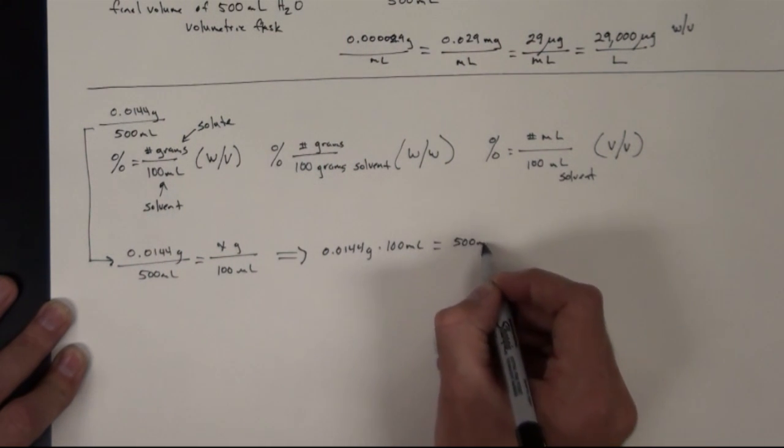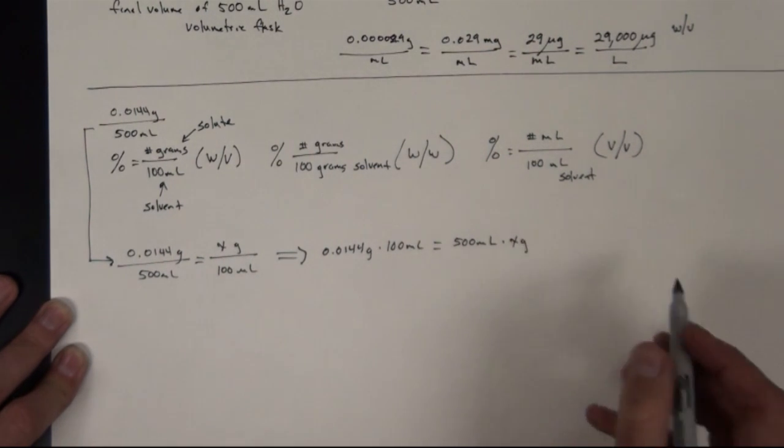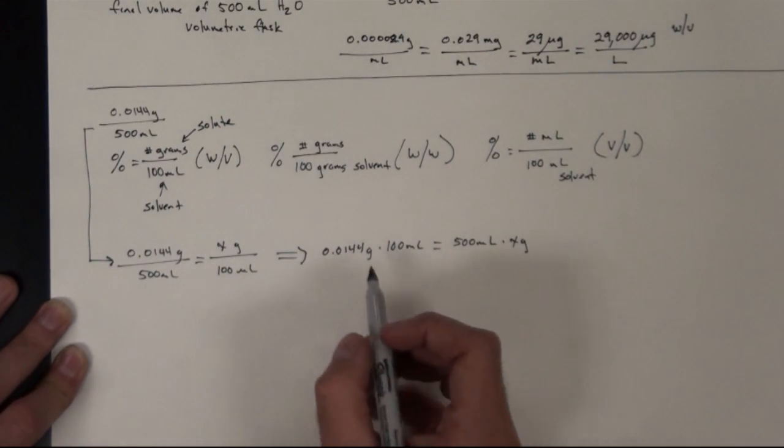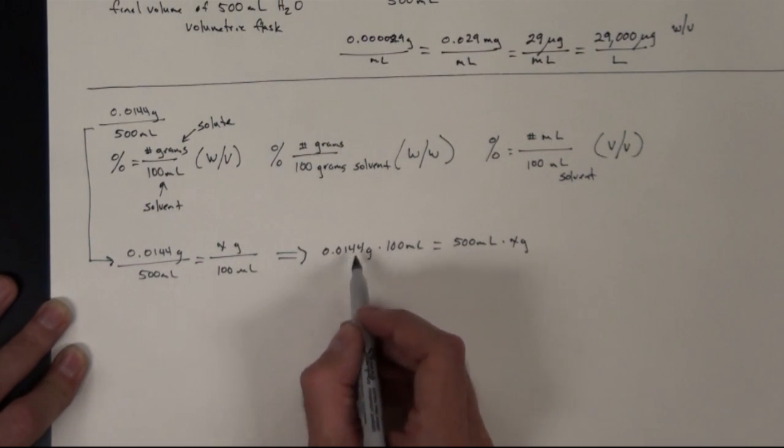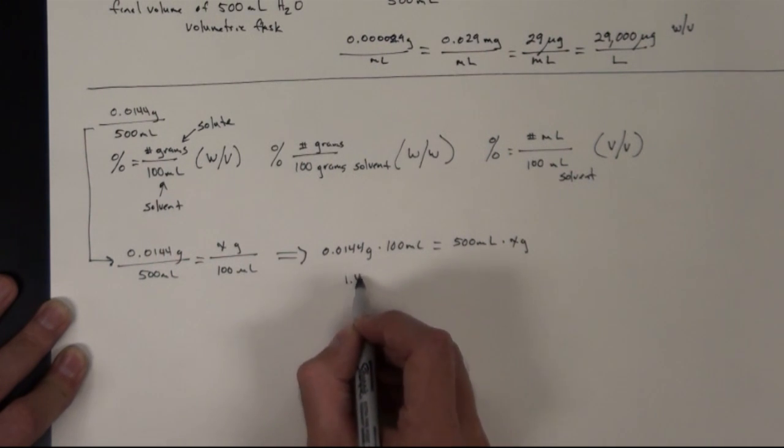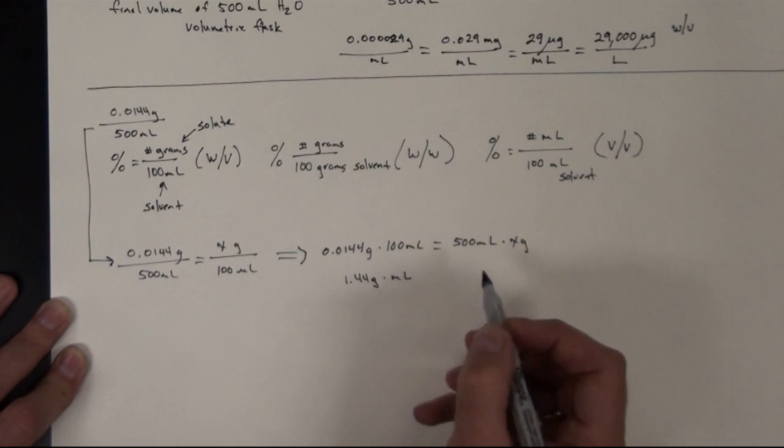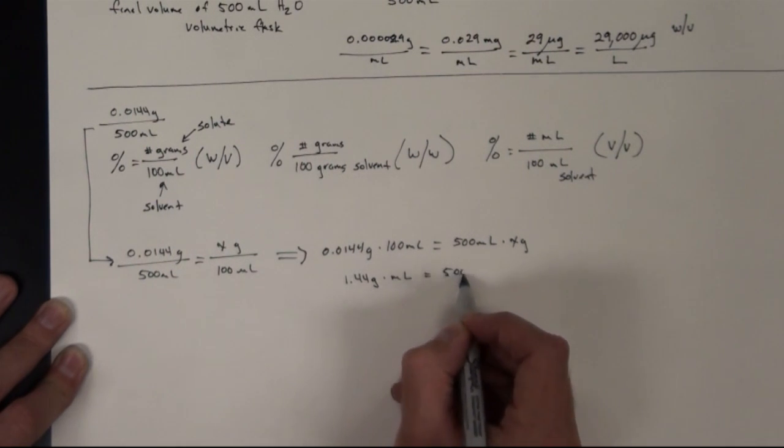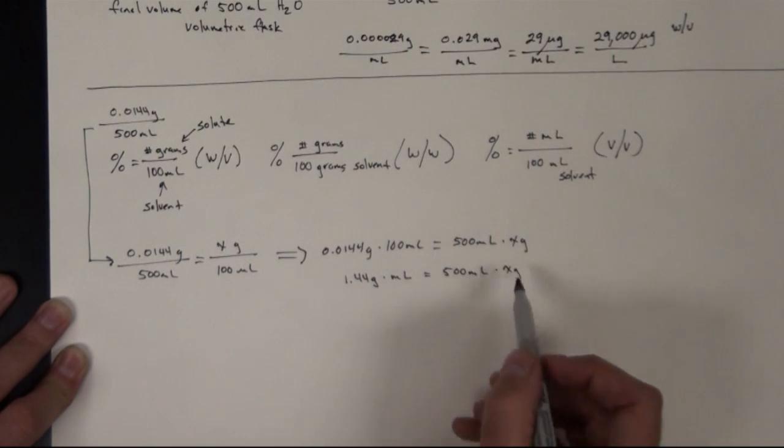500 milliliters times x grams. So if we break that down further, if we multiply this by 100, we're going to move this over two decimal points. So it would be 1.44 grams times milliliters and that will equal 500 milliliters times x grams. Solve for x,